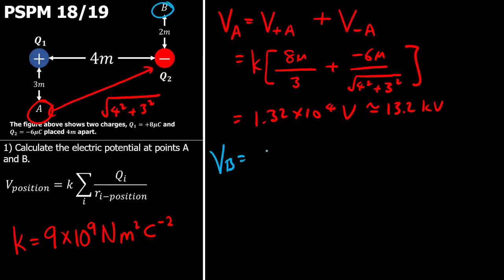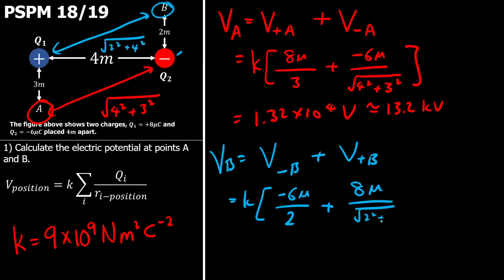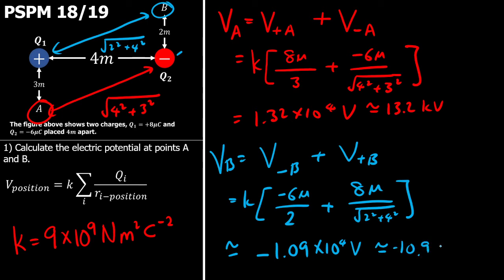Again, if we consider B, we have two contributions. The first one from the negative charge, V negative B, plus the second one from the positive charge, V positive B. And again I'll take out the K. I have negative 6 microcoulombs and the distance between them is 2. The second part, which is the positive charge, I'll have 8 microcoulombs and then the distance between them is the square root of 2 squared plus 4 squared. This should give me an answer of approximately negative 1.09 times 10 to the power of 4 volts, which is approximately negative 10.9 kilovolts.